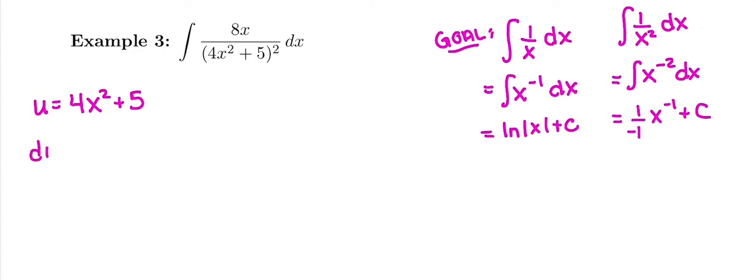So the derivative of that, du/dx, a regular derivative: derivative of 4x² has been 8x all semester. Derivative of 5 is 0. Then we need to get du by itself, so we just multiply by dx. There we have our u and our du.